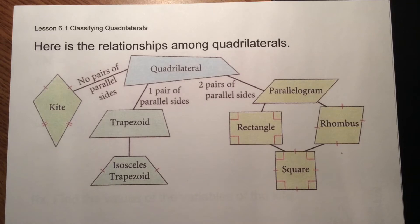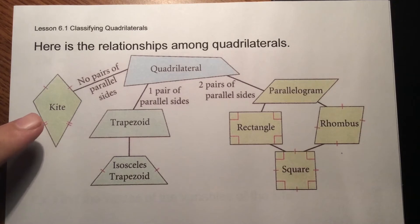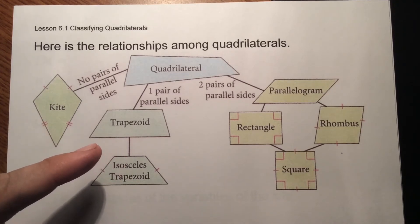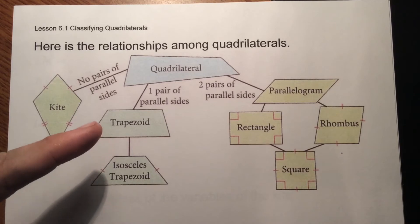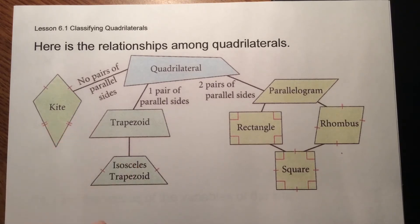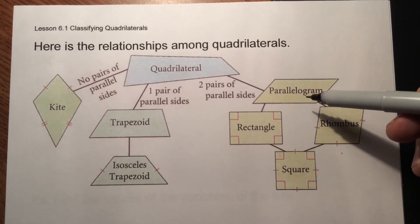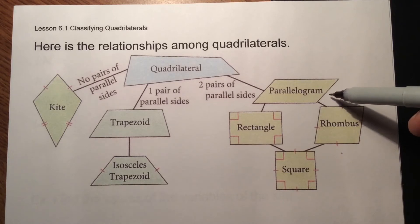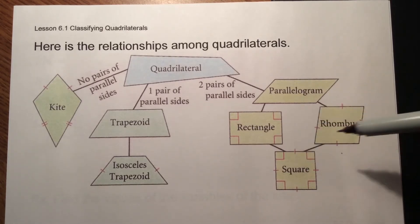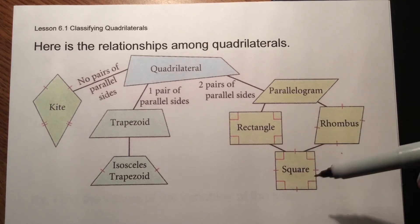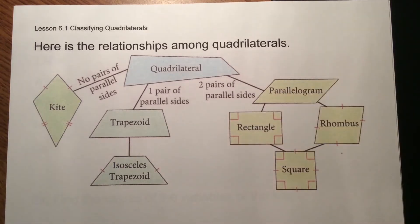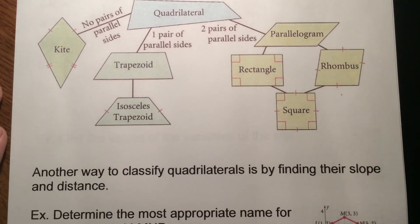If it has four sides, it's a quadrilateral. Then look for parallel sides. If no sides are parallel, it's a kite. If there is one set of parallel sides, it's a trapezoid — and if the non-parallel sides are congruent, it's an isosceles trapezoid. If it has two pairs of parallel sides, it's a parallelogram. From there: four right angles makes it a rectangle, four congruent sides makes it a rhombus, and both makes it a square.